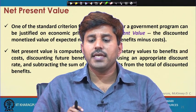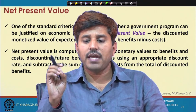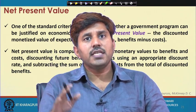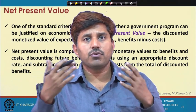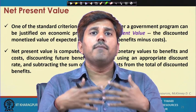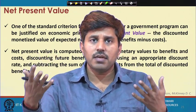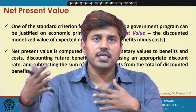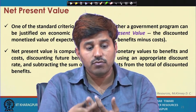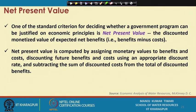NPV or net present value is computed by assigning monetary values to benefits and costs. All benefits and costs are assigned a monetary value. Those already in monetary terms are taken straightforward, but externalities — social benefits and costs, environmental benefits and costs — which cannot be taken in monetary terms are also assigned a monetary value. Future benefits and costs are discounted using the appropriate discount rate, and the sum of discounted costs is subtracted from the total discounted benefits to get the net present value.